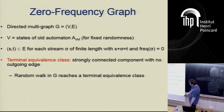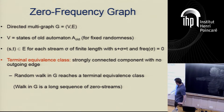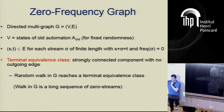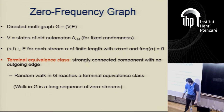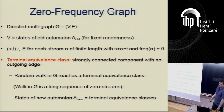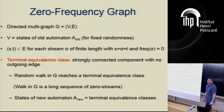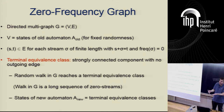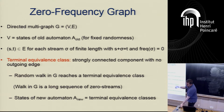I define a new automaton where the states are the terminal equivalence classes of the zero frequency graph. Regarding the length of sigma: you can look at all simple paths and cycles in your automaton, set up a linear system, and get a bound in terms of the coefficients. The new automaton has at most as many states as the old automaton.